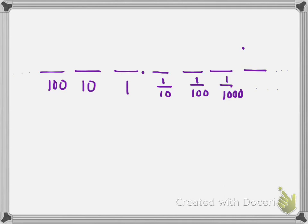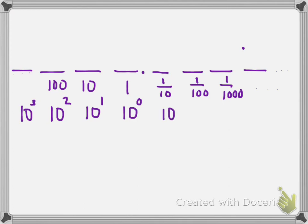Now our students at the elementary level wouldn't think like this, but for you to see where it's going, these could also be place values as exponents: 10 to the first, 10 to the second, 10 to the third, and so on. We have 10 to the zero, which is the ones place, 10 to the negative one, 10 to the negative two, and 10 to the negative three.